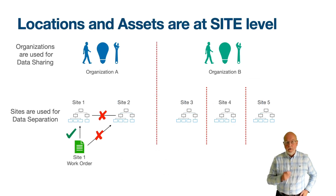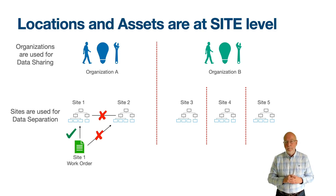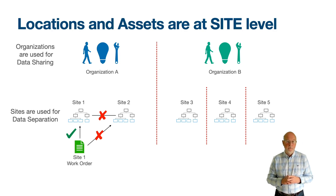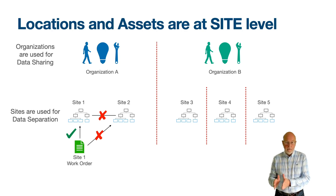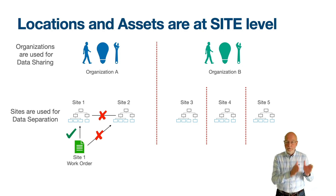Locations, like assets, are site-level objects. In Maximo's multiple organisations and sites data structure, a site is for data separation and an organisation is for data sharing. Locations and assets cannot be related to locations in different sites, cannot contain assets from other sites, or be referenced on work orders for other sites. A work order for the Bedford site can only reference work to be performed on locations and assets on the Bedford site — there is data separation between the work performed on one site from the work performed on other sites.